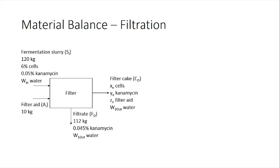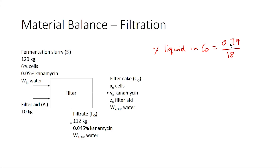The first part of the question asked for the percentage of liquid accompanying the filter cake. We know the total mass of the filter cake is 18 kilograms and the mass of water accompanying it is 0.79 kilograms. So the percentage of liquid in the filter cake = (0.79 / 18) × 100 = 4.39%.